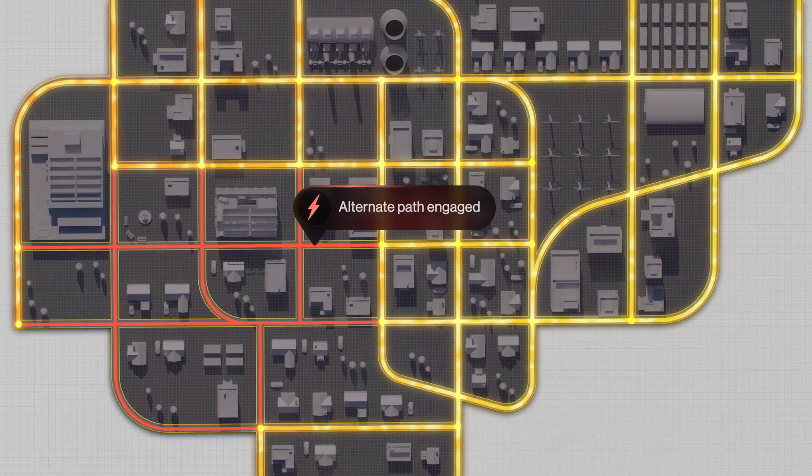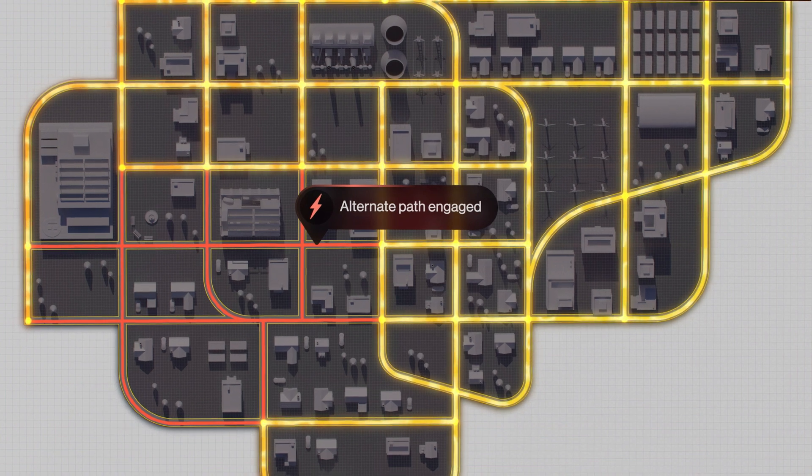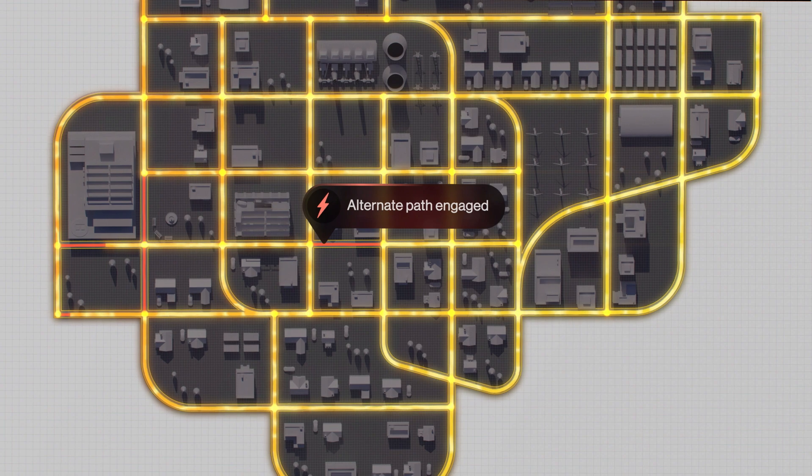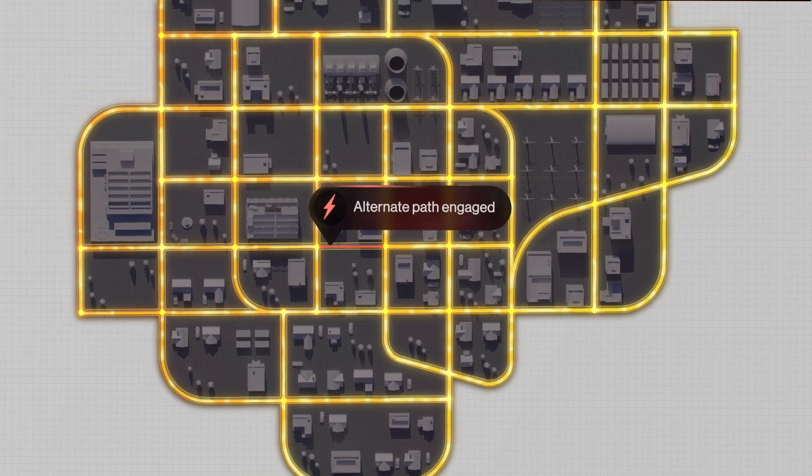In the future, a fault won't take down the whole block. Instead, the system will reroute, isolate and adapt, minimizing the impact right away, like water flowing around a rock.